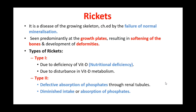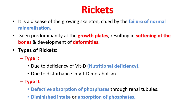Type 2 rickets involves defective absorption of phosphates. Phosphate is essential for normal formation of bone and teeth, and vitamin D helps the small intestine and kidney absorb phosphates back into the bloodstream. Defective absorption of phosphate through renal tubules leads to rickets. Nutritional rickets typically occurs in children around one year of age and may occur in older children with malabsorption syndrome.